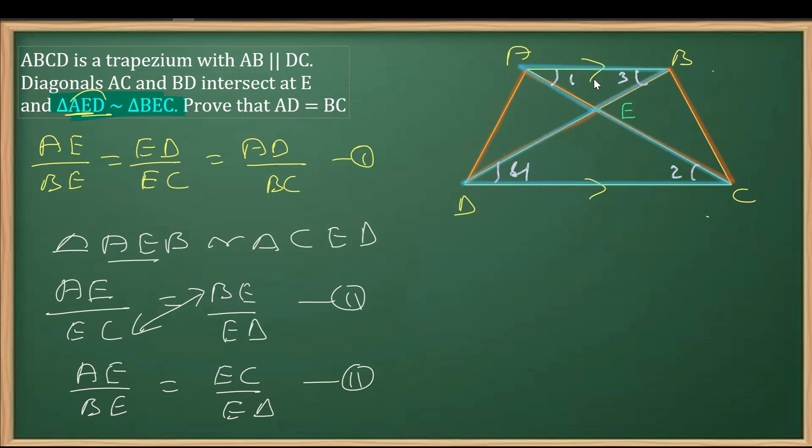Here we have AE over BE from one equation, and here too we have AE over BE. From here, what we can conclude is that we can equate these two—I mean to say this can be equated with this.